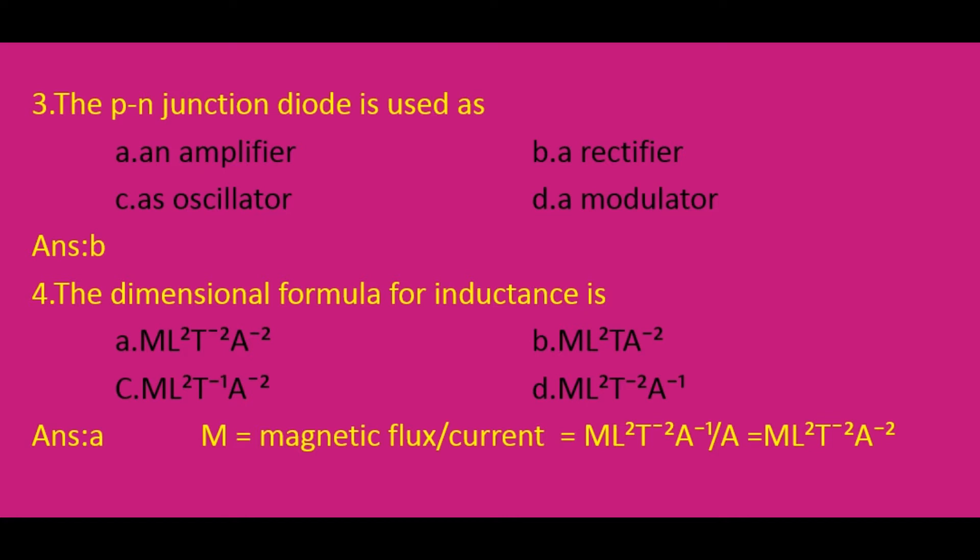The dimensional formula for inductance: the formula is inductance = magnetic flux / current. The dimensional formula for magnetic flux is ML²T⁻²A⁻¹, and current is A. When the denominator A comes to the numerator it becomes A⁻¹, so inductance = ML²T⁻²A⁻². The correct answer is option A: ML²T⁻²A⁻².